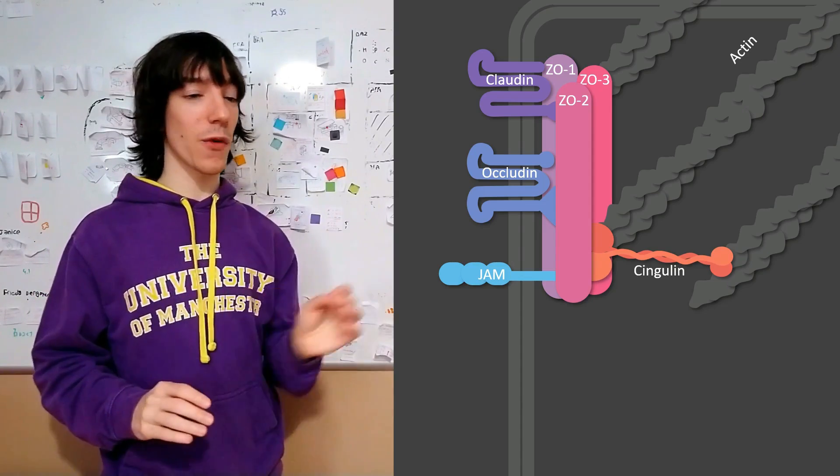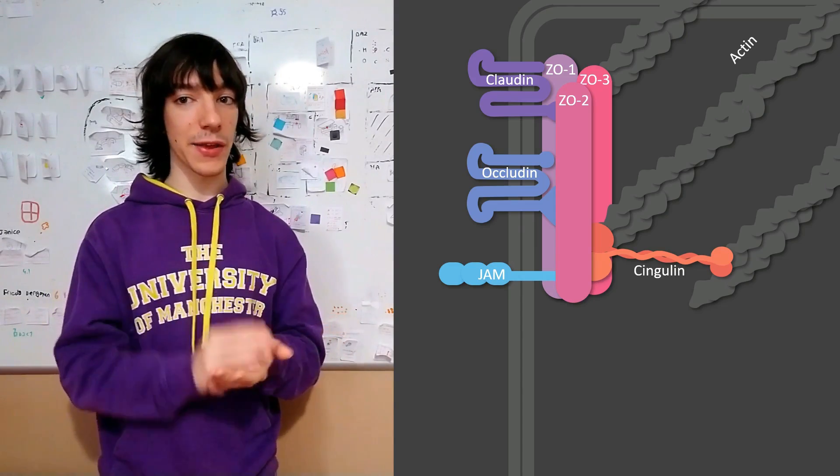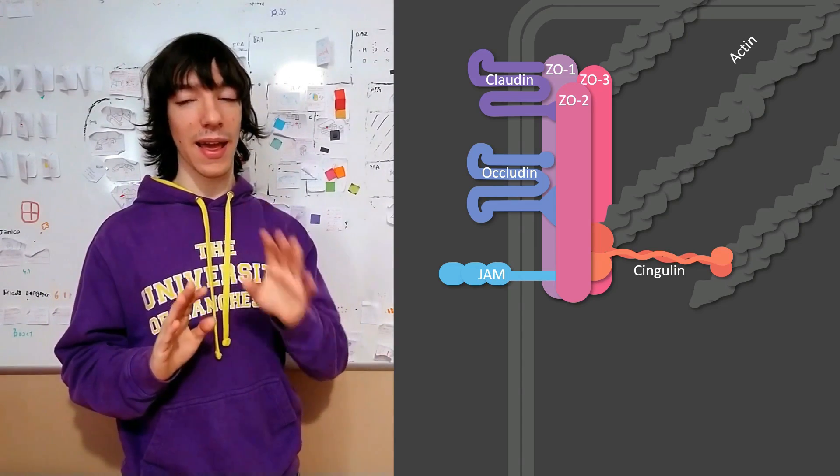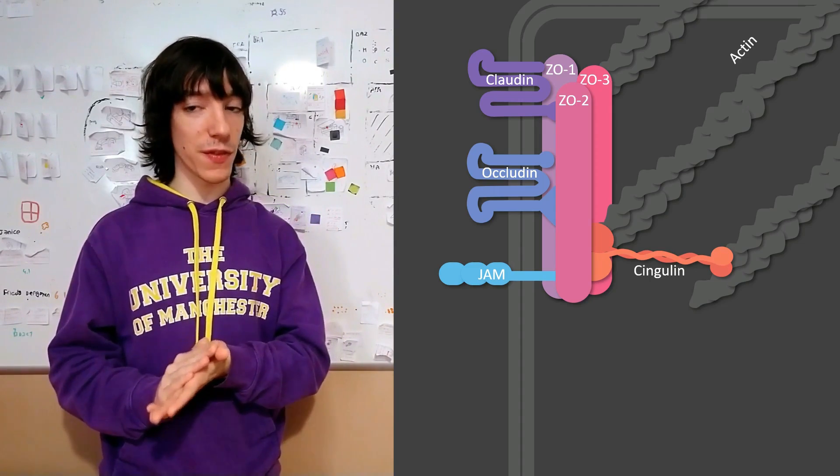We also have other proteins that can participate, other transmembrane proteins, like angulin, tricellulin. Again, they are less understood and I'm not going to explain them in this video.